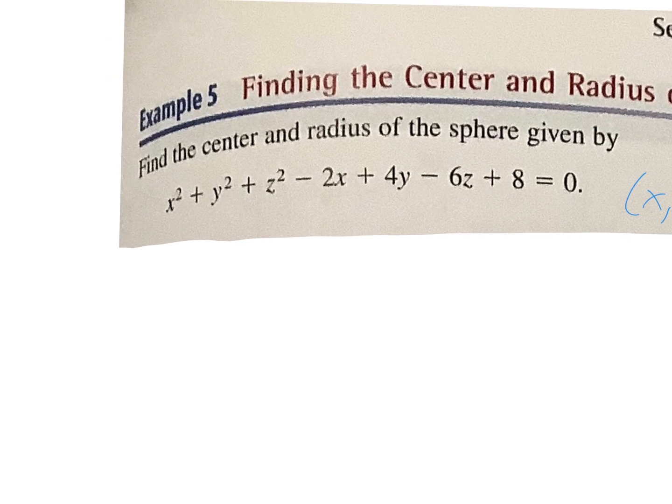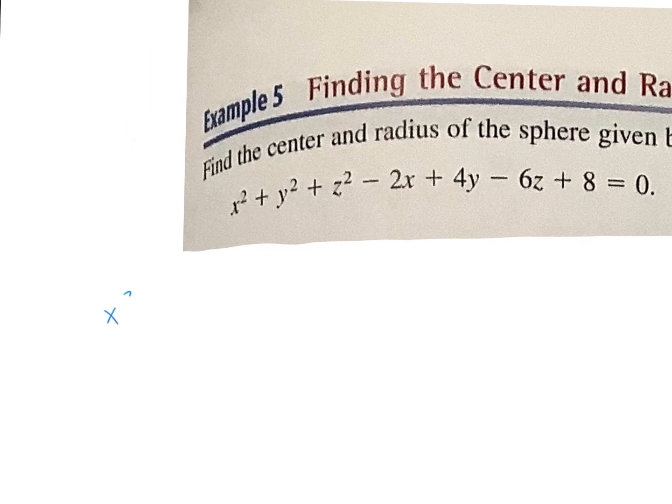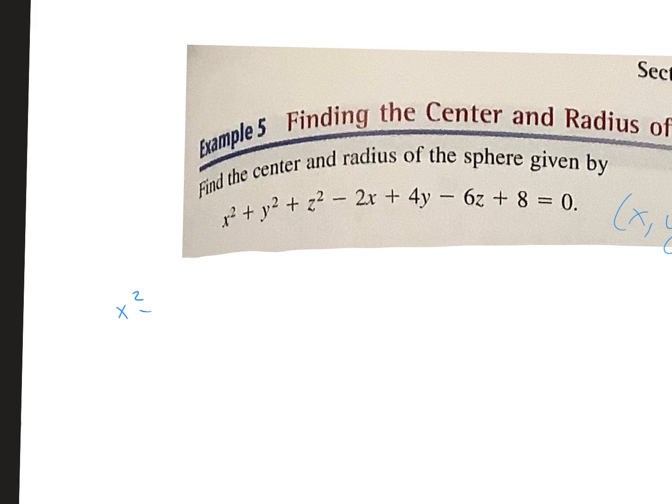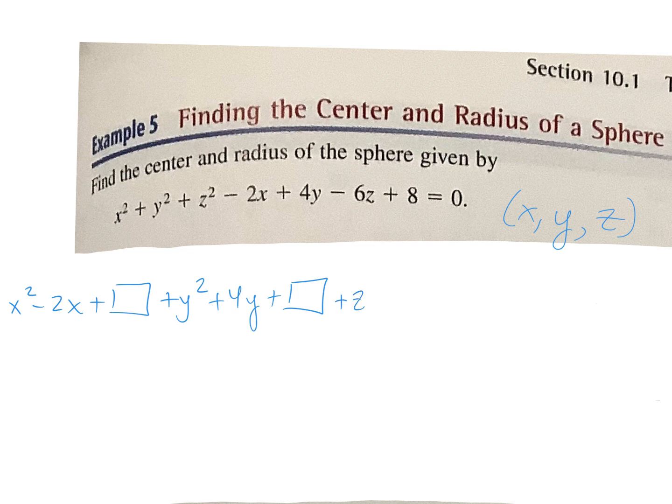We're going to do the same thing. Now instead of two variables, we have three. So we want to collect our variables first. I have X squared, and then what else goes with my X squared? Minus 2X. Then I'm going to say plus a box because we're going to complete the square. Now let's get our Y's together. Plus Y squared plus 4Y. Complete the box. And then now we get our Z's together. It's a positive Z squared minus 6Z plus your box. And then what do I do with this eight? Move it to the other side. When I do, what does it become? Negative eight. Perfect. So now we're going to complete the square three times.